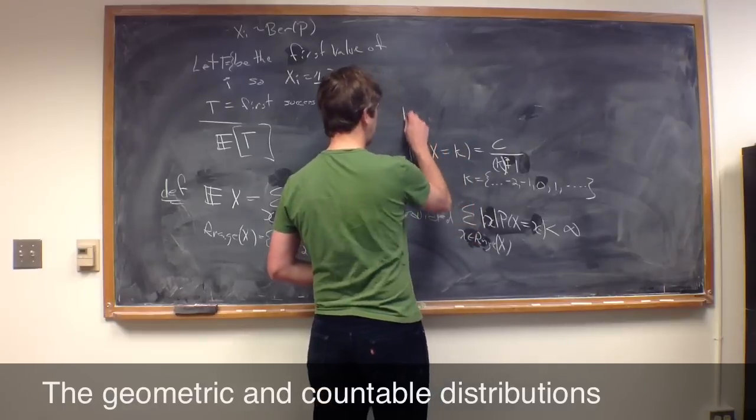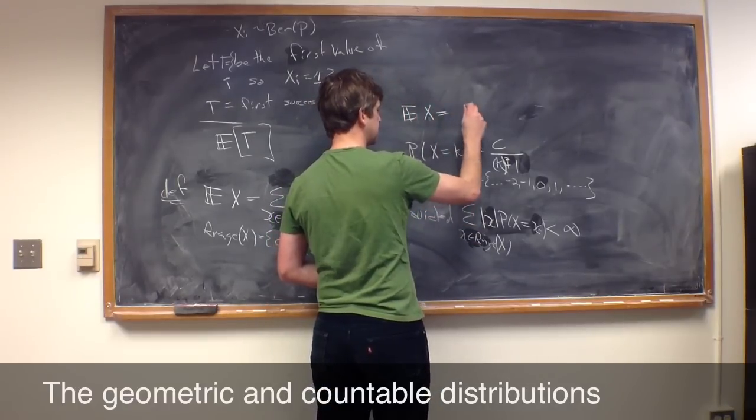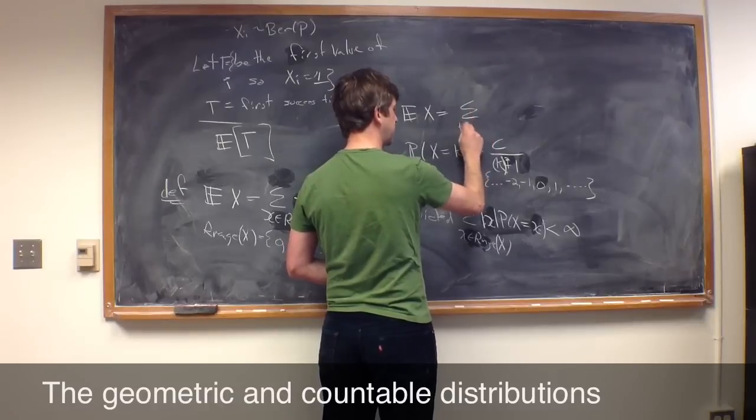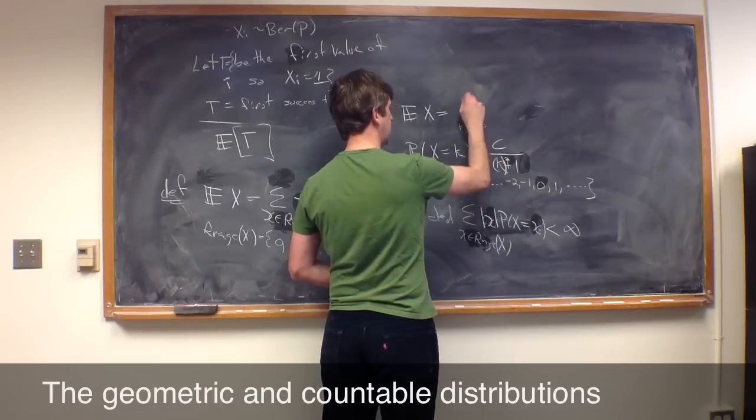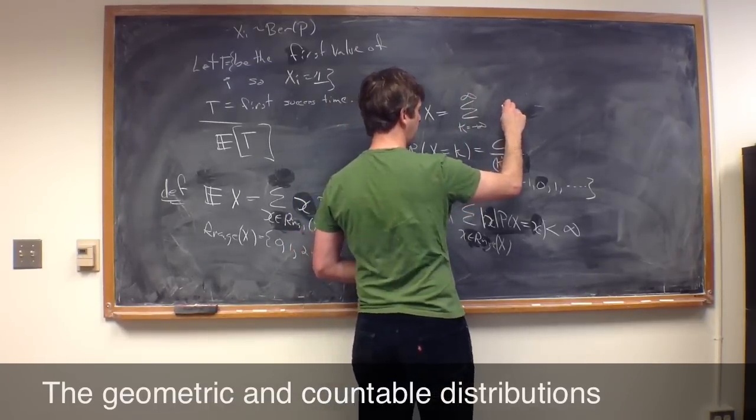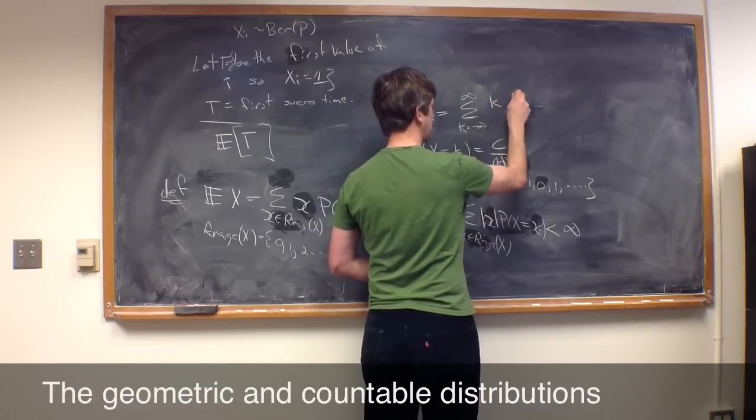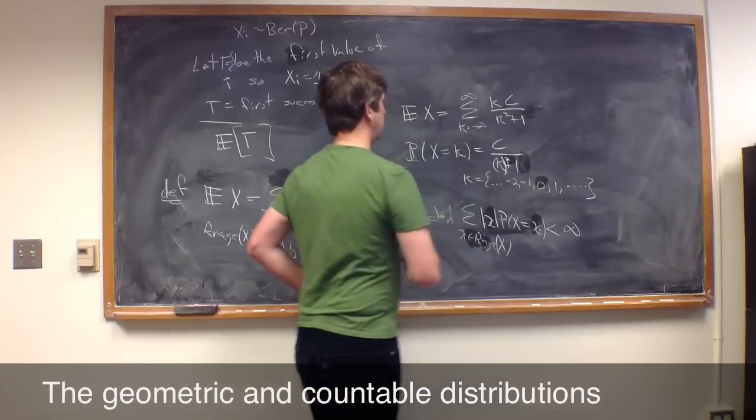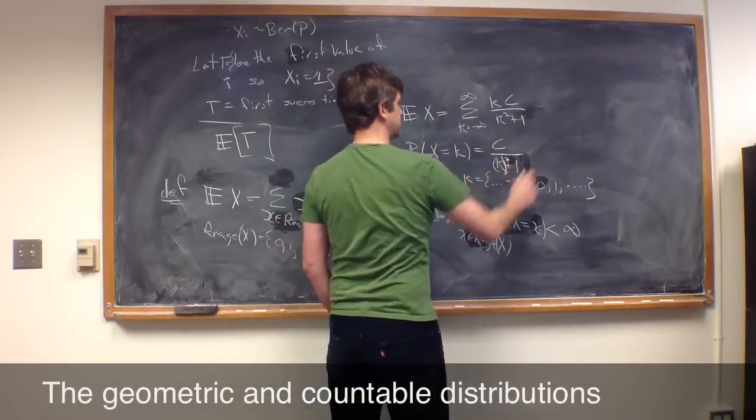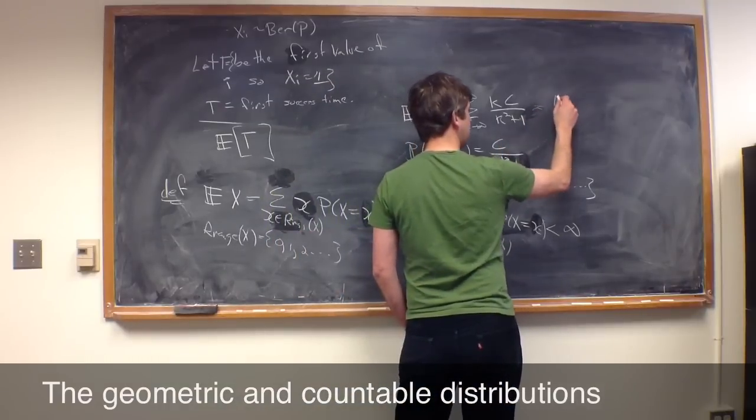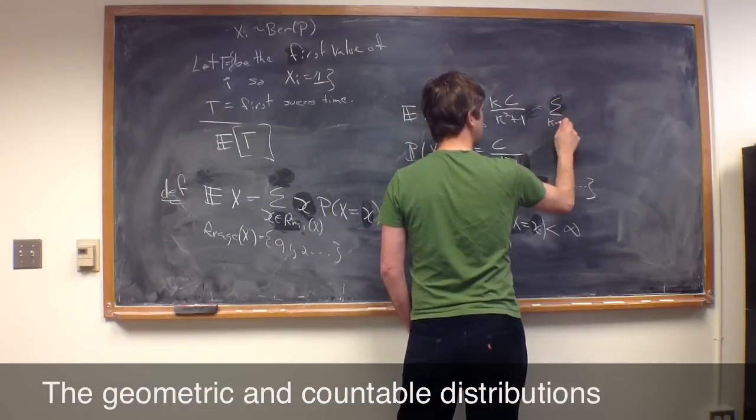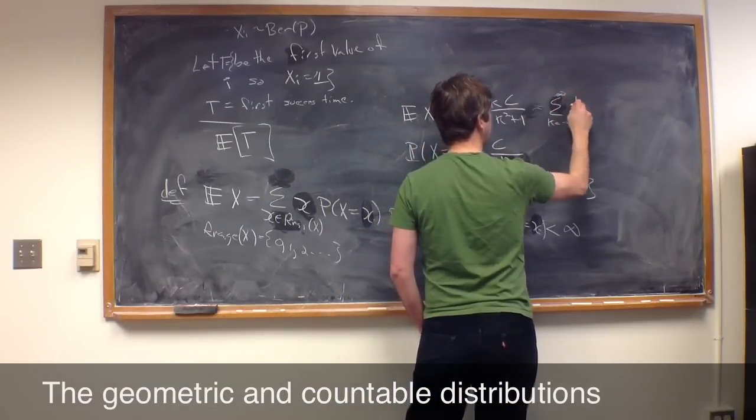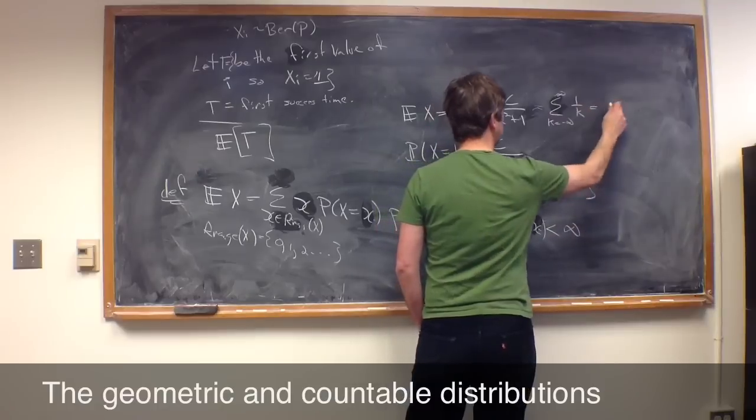If we calculate the expected value of X, that would normally be K equal minus infinity up to infinity of K times C over K squared plus 1, where C was chosen so this thing sums to 1. But the problem with this is that this looks essentially like the sum K equals minus infinity to infinity of 1 over K, which is equal to infinity.